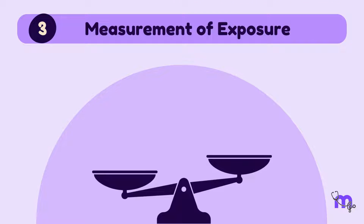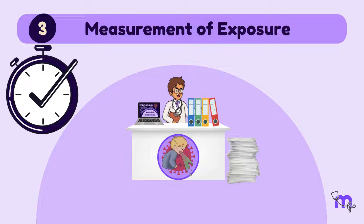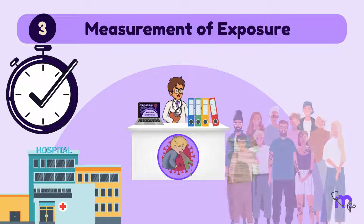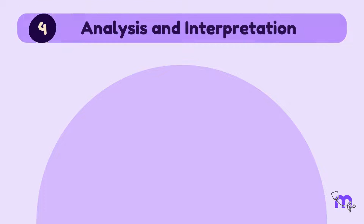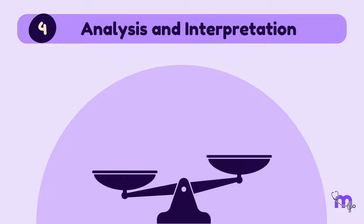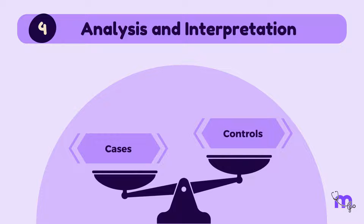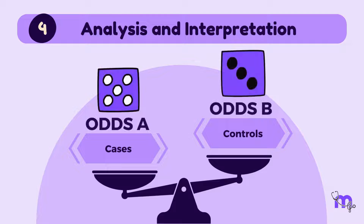My third step is measuring the exposure. I do this by going back in time, using interviews and questionnaires, or by studying previous records of cases such as hospital records and employment records. The last step is to analyze and interpret. In this step, I find out the exposure rates among the cases and controls and estimate the disease risk associated with exposure. This is done using the odds ratio.